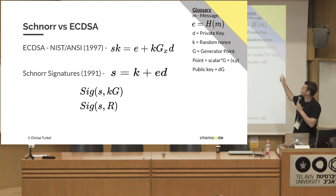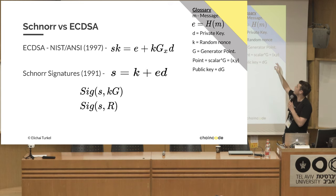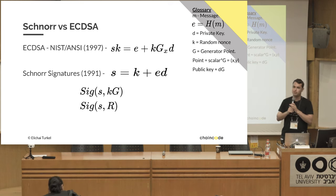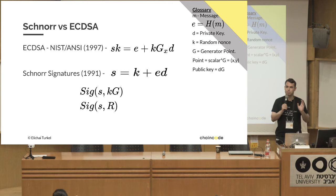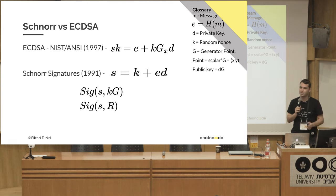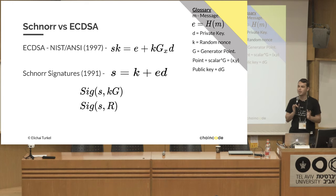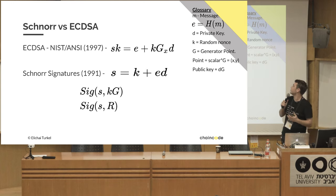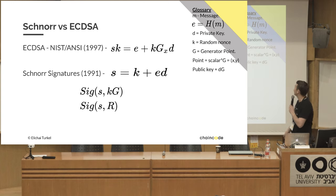We'll start with a quick overview of the glossary. We have a message M, and E which is a hash of that message. In practice it's going to be a hash of more than just a message to mitigate some attacks, but I tried to minimize complexity so people can actually comprehend everything here.